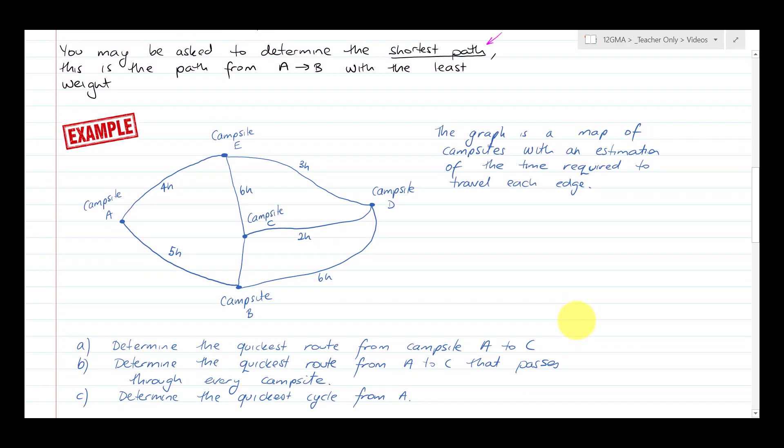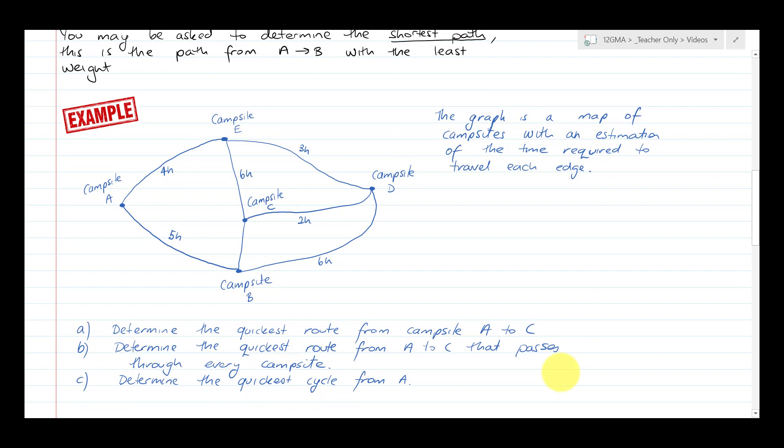This graph is a map of campsites with an estimation of the time required to travel each edge. Campsite A, B, C, D, and E. Let's determine the quickest route from campsite A to C. Now we can't go directly from A to C, but what we can do... Let's make that four hours.